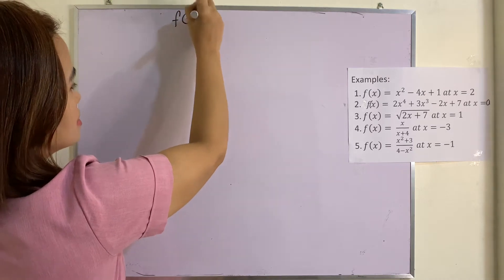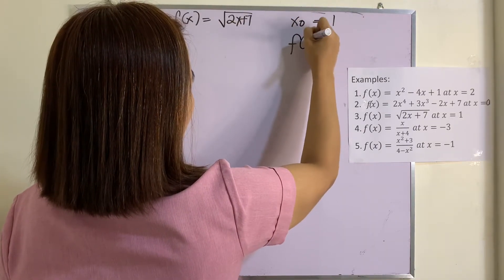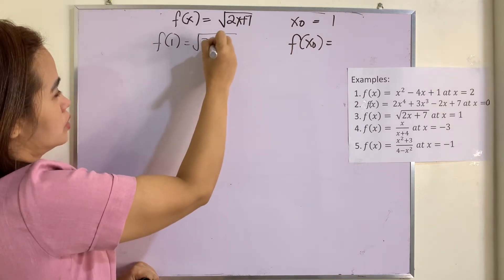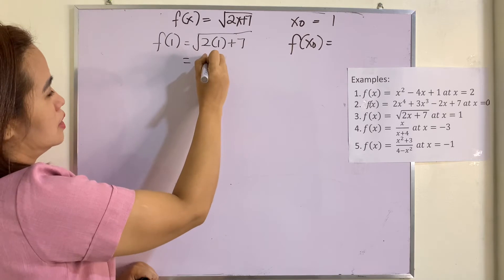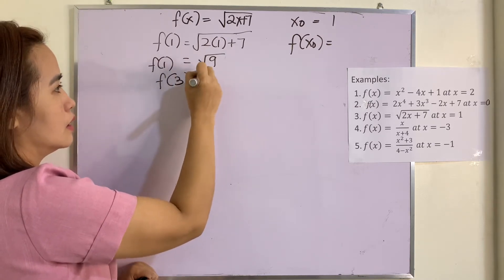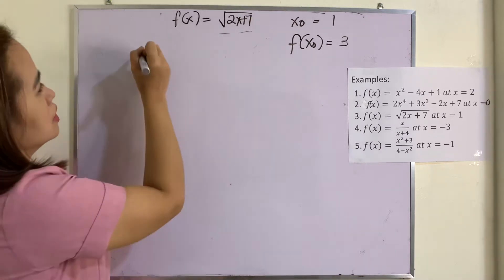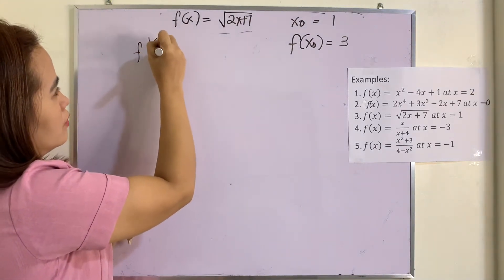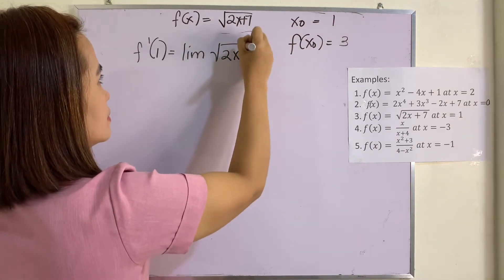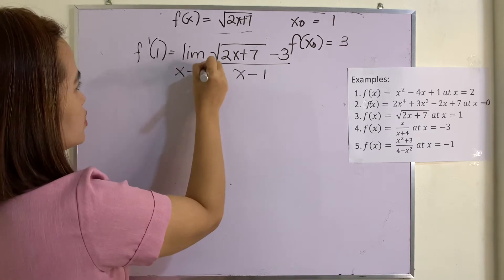Example 3. We have F(x) equal to the square root of 2x plus 7. x₀ is equal to 1. Let us find F(x₀): F(1) equals the square root of 2 times 1 plus 7, which is the square root of 9. F(1) is equal to 3. Now let us find M or the derivative: F prime of 1 equals the limit of square root of (2x plus 7) minus 3, over x minus 1, as x approaches 1.